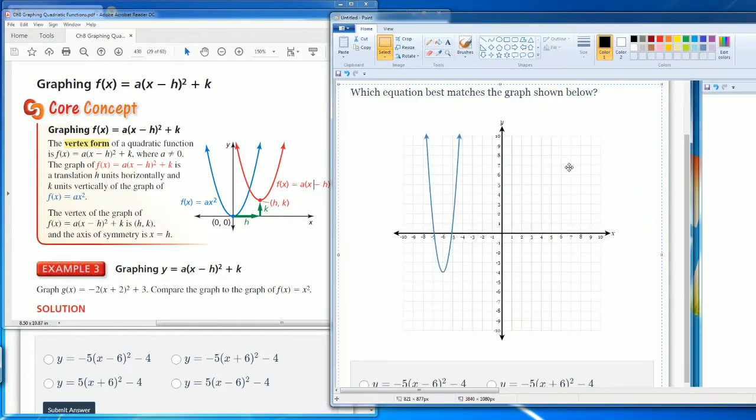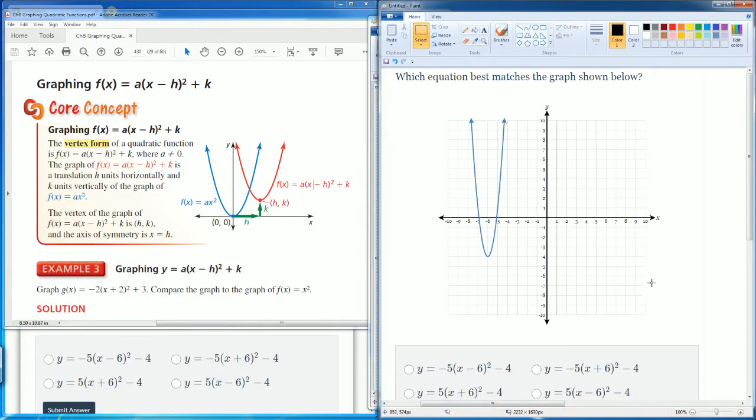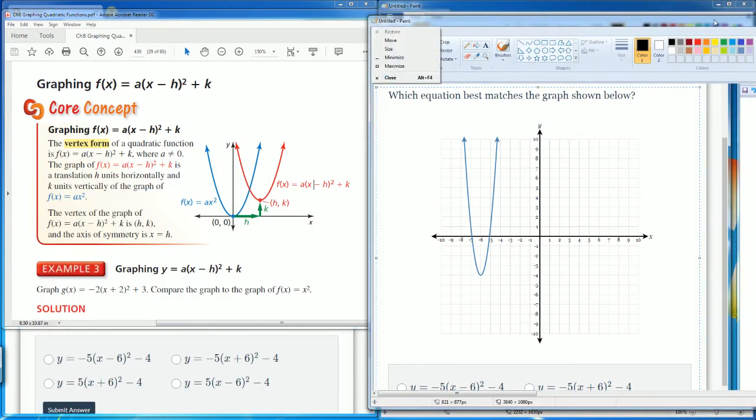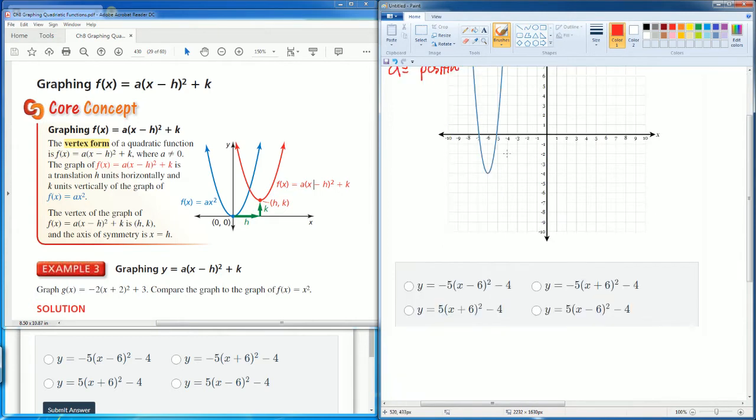So we have the problem here. We are going to take a look at first of all how it points. We see that it points up. So we know that the a here has to be equal to a positive number.